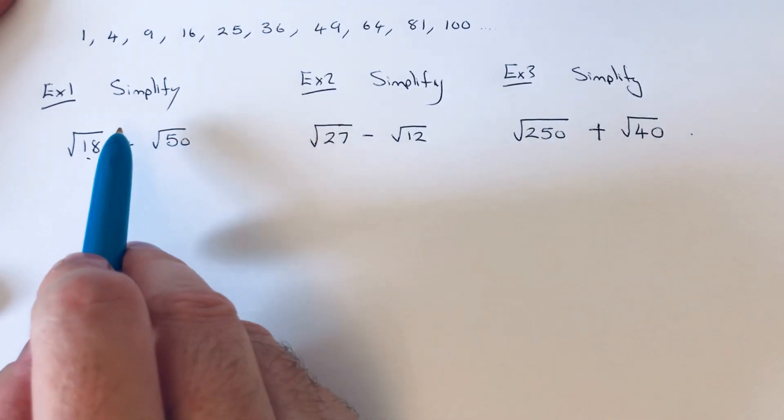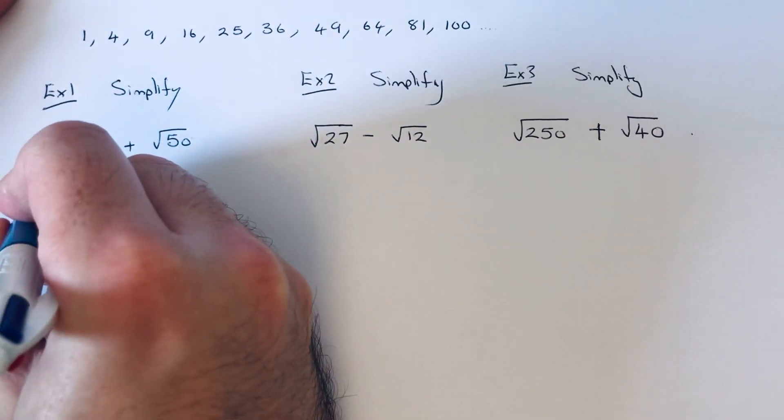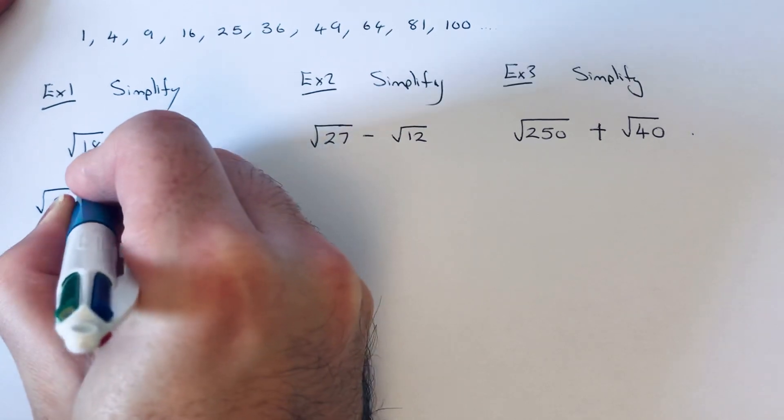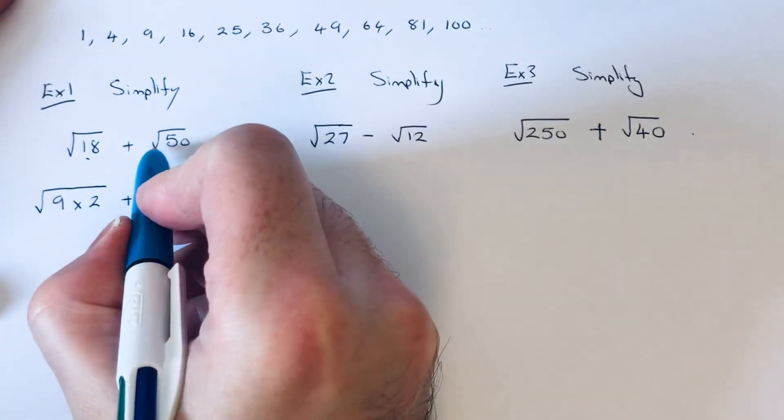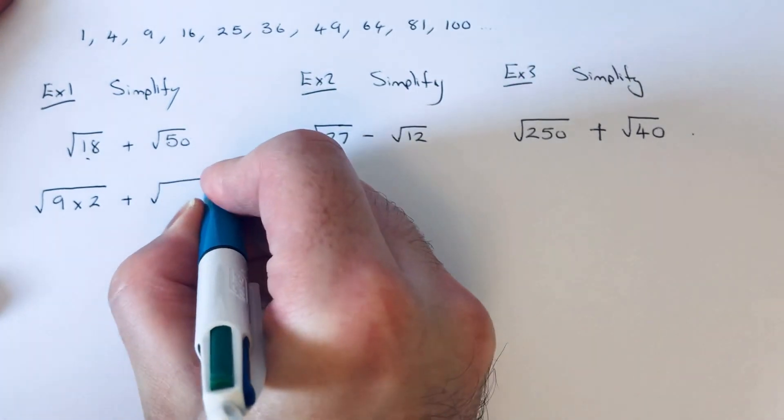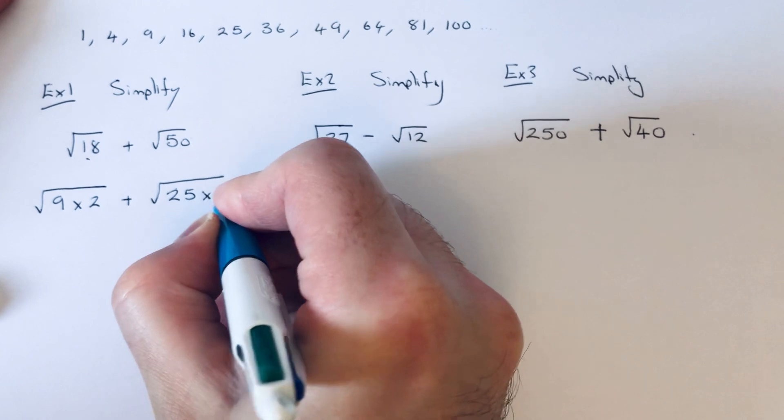So our biggest square number which goes into 18 is 9. So we can rewrite root 18 as 9 times 2. Our biggest square number that goes into 50 is 25. So we can write 50 as 25 times 2.